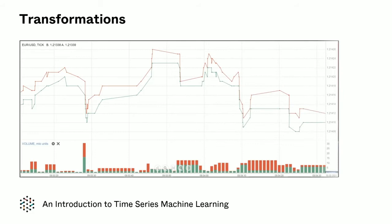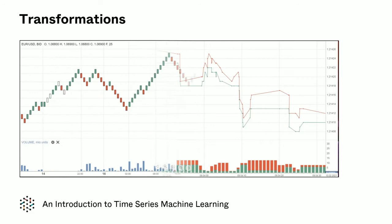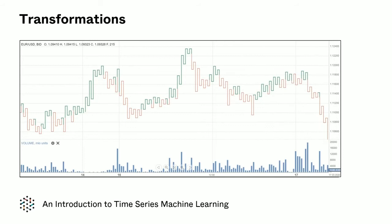Only the most granular data will suffice, so we make extensive use of tick data which is on a trade-by-trade basis. This allows us to perform the full spectrum of transformations and sampling techniques to squeeze out every last drop of information.